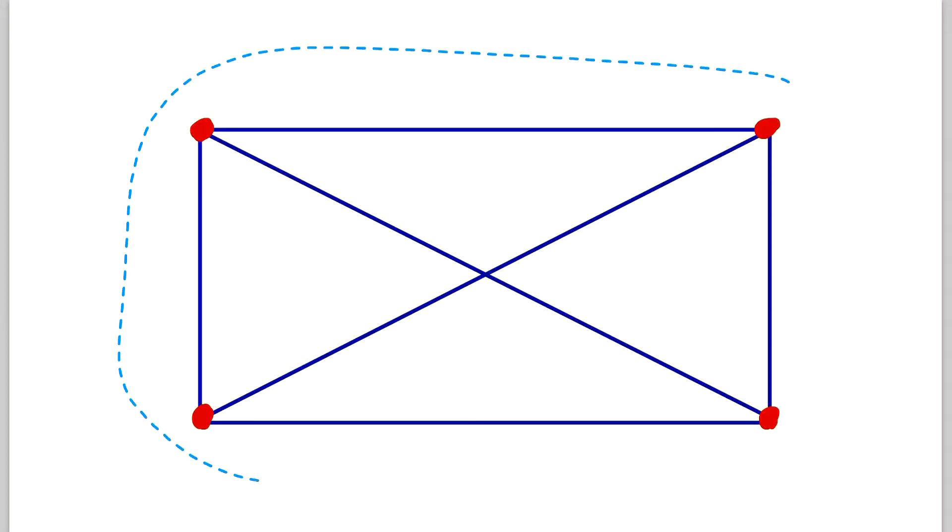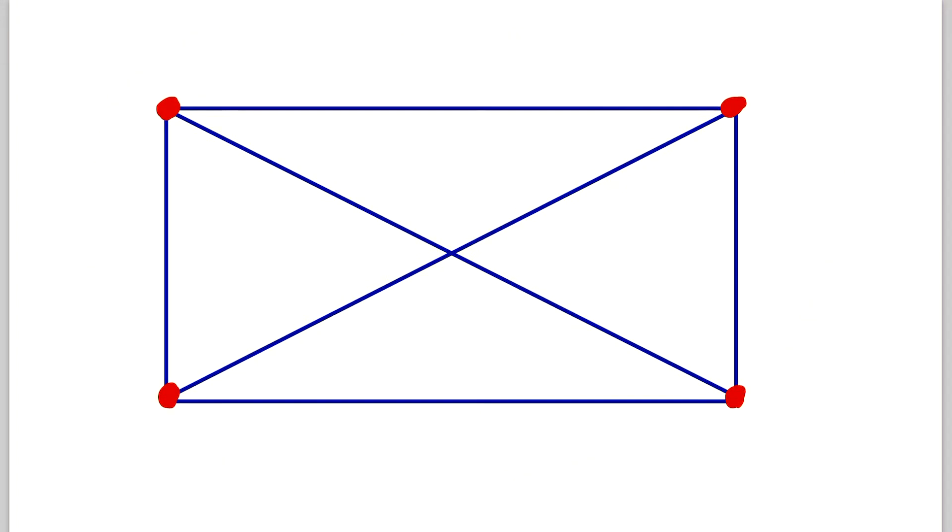If you already know what a regular graph is, a cubic graph is just a 3 regular graph. So it is a graph like this where we see every vertex has degree 3.